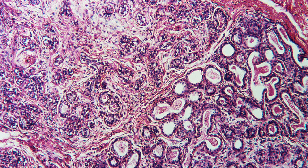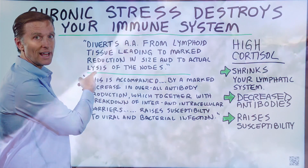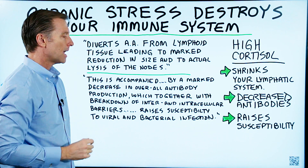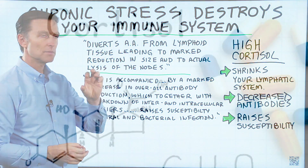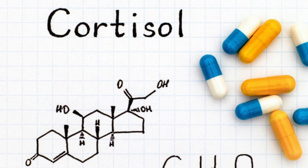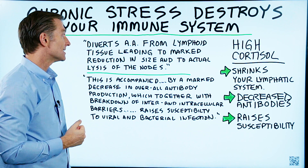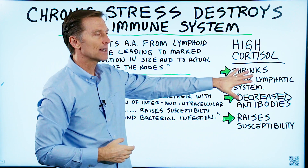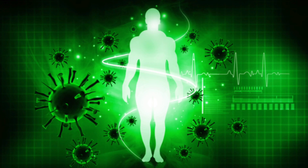So that's what lymphoid tissue is — leading to a noticeable or prominent reduction in size, and to actual lysis, which means breakdown of the nodes — the lymph nodes. Lymph nodes are the location where the immune reaction takes place. You have white blood cells in there along with the pathogen. So high cortisol will divert amino acids from the lymphatic system, leading to a noticeable reduction in size, to actual breakdown of the lymph nodes. Basically, it shrinks your lymphatic system, which means you're going to lose your defense mechanism — it's making your immune system smaller.